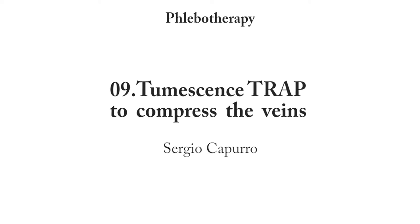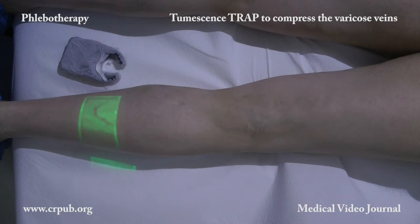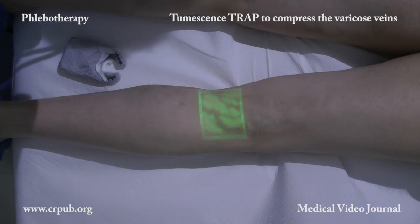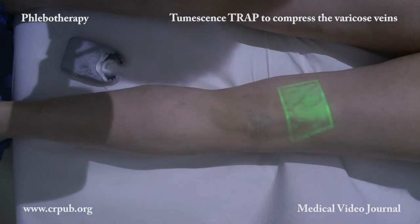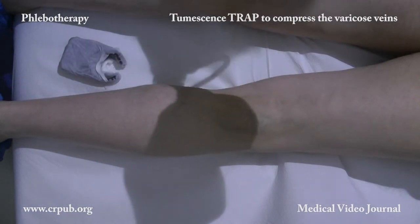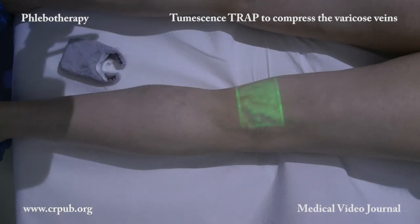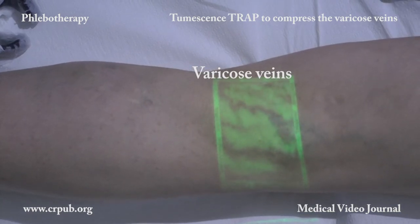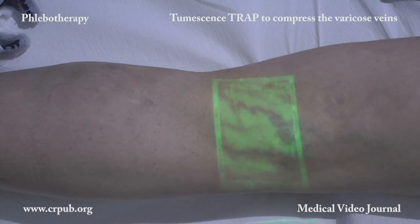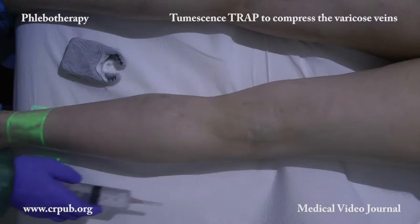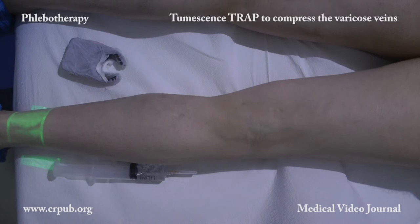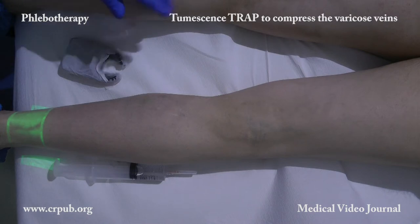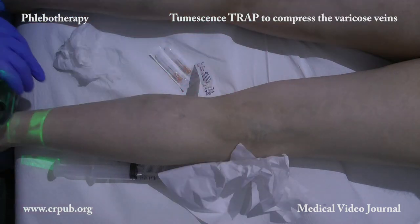Tumescence TRAP is used to compress the veins. It is one of the complementary procedures of Three-dimensional Regenerative Ambulatory Phlebotherapy, or TRAP. TRAP has revolutionized phlebological treatment by replacing irrational techniques such as sclerotherapy, phlebectomy, saphenectomy, so-called functional ligature, burning by means of laser and high frequency currents, and the recent absurd procedures of gluing the veins. TRAP is not a mechanistic method; it is a biological technique that treats the venous walls, making the veins continent once again.